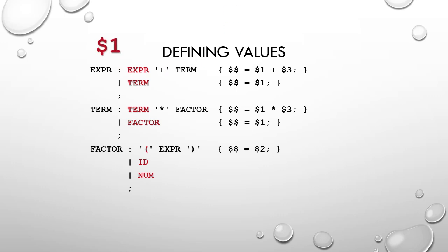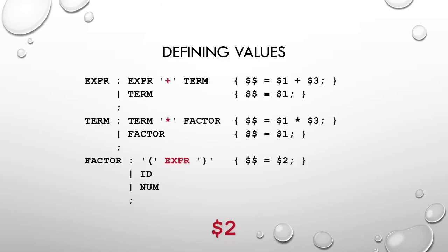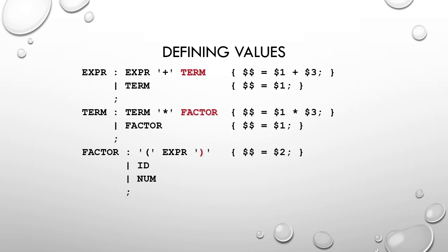For 'expression produces term', $$ equals $1 — the attribute of the first term is assigned to the left-hand side. For 'term produces term multiplied by factor', $$ equals $1 multiplied by $3. The attribute of term (first symbol) is multiplied by the attribute of factor (third symbol), and the result is given to the left-hand side term. For 'factor produces opening expr closing', $$ equals $2, since the expression is the second symbol and its attribute is passed to the left-hand side factor.